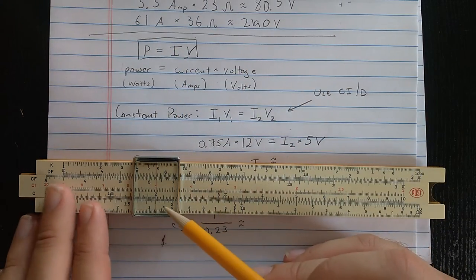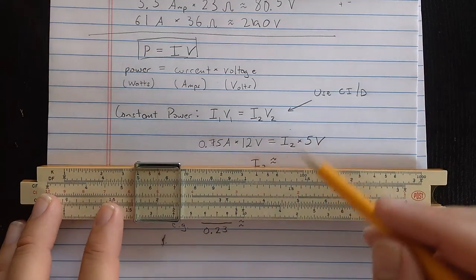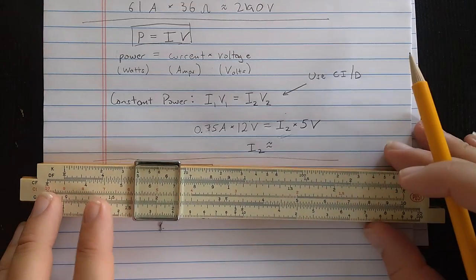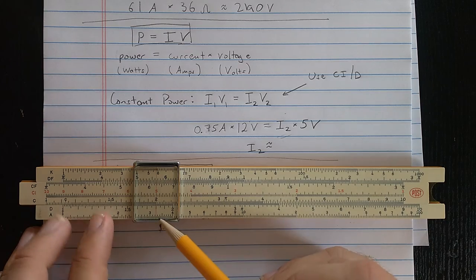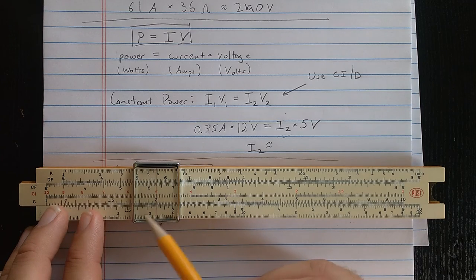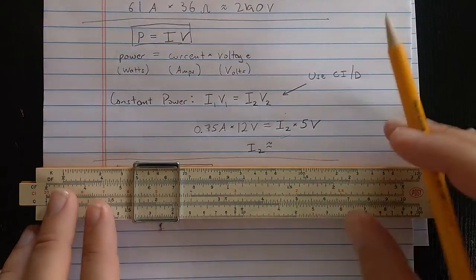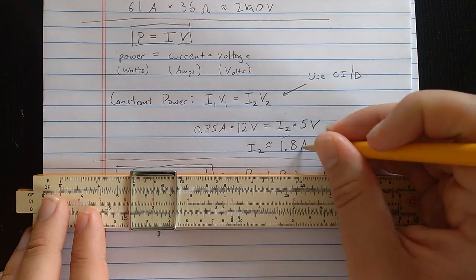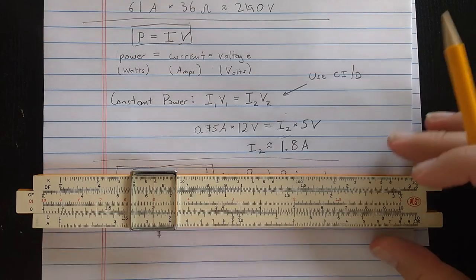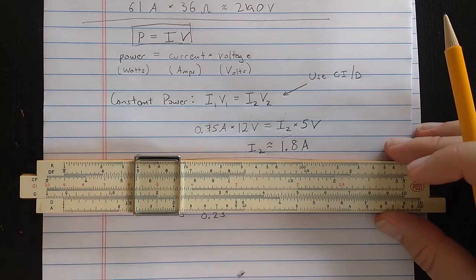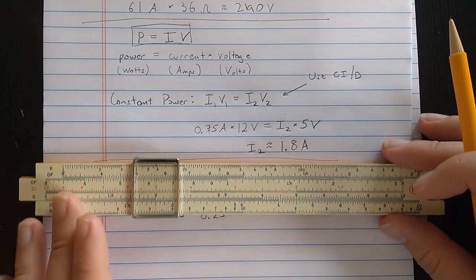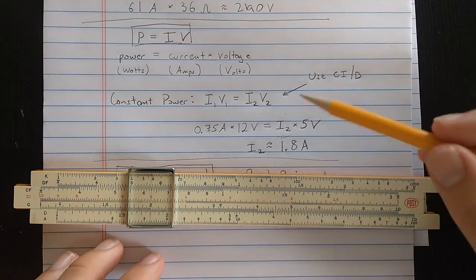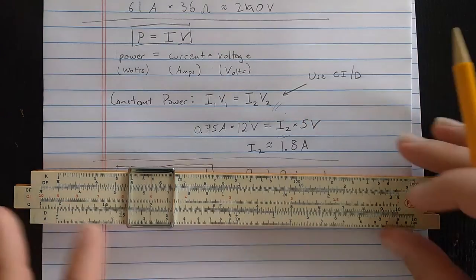So, let's find the 5 on the CI scale. And then I should read the result of the other number and the product on the right, the second current, on the D scale. And I see there 1.5, 6, 7, 8, 1.8 amps. So, when you use the D scale against the CI scale, instead of a constant ratio, you get a constant product, and you can solve inverse proportions like this.